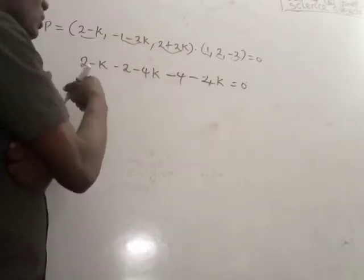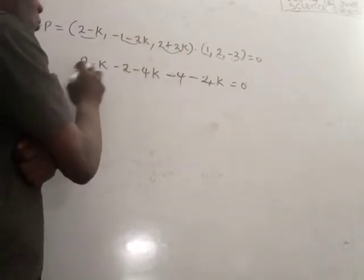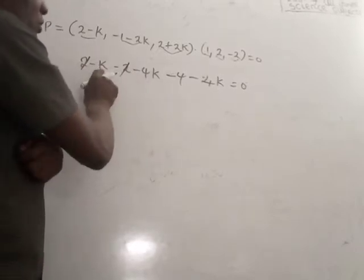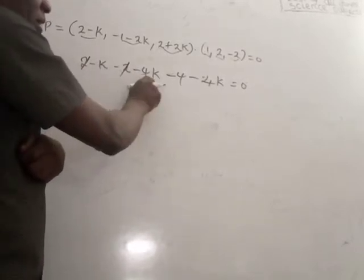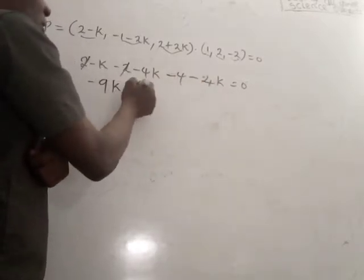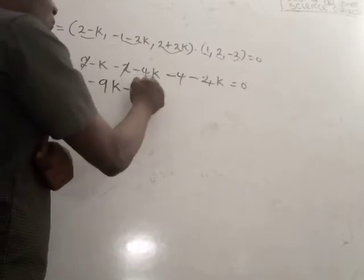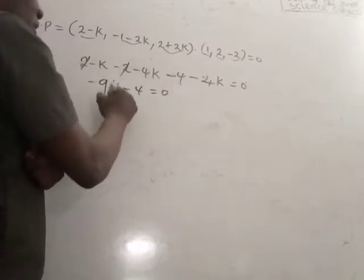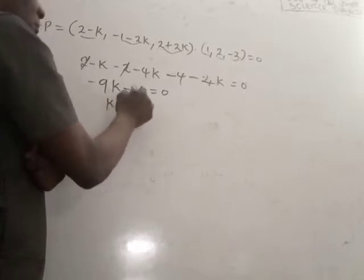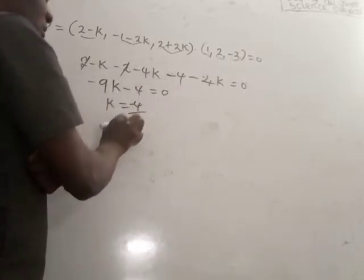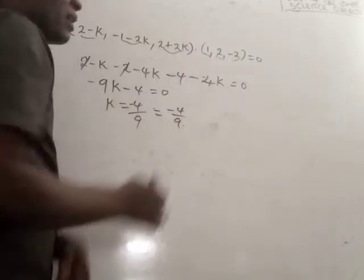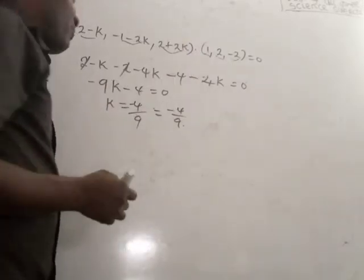Collecting terms: minus 9k minus 4 equals zero, so k equals minus 4 over 9.